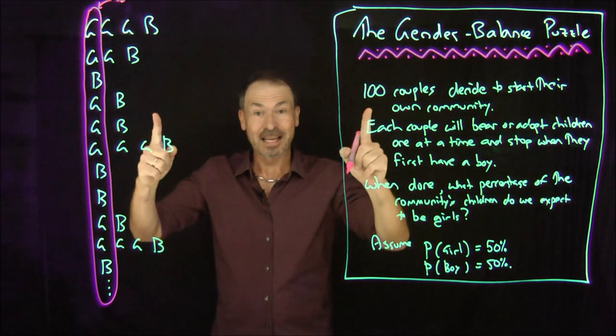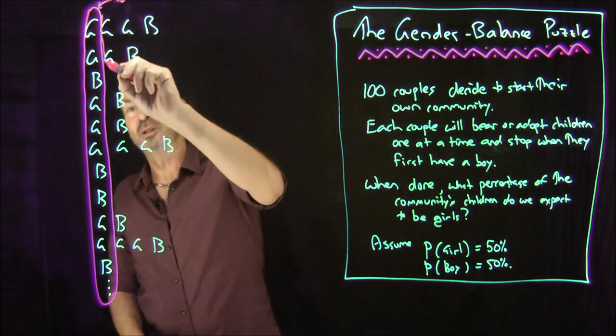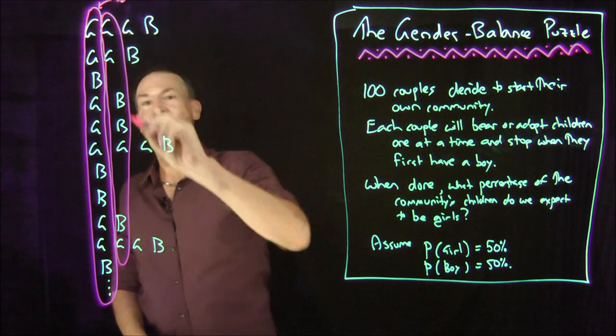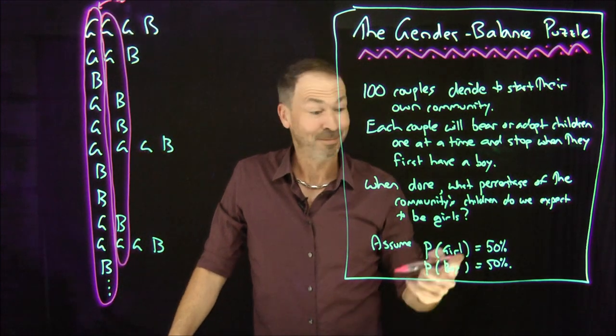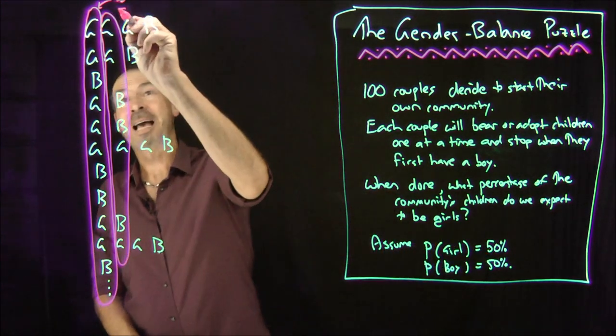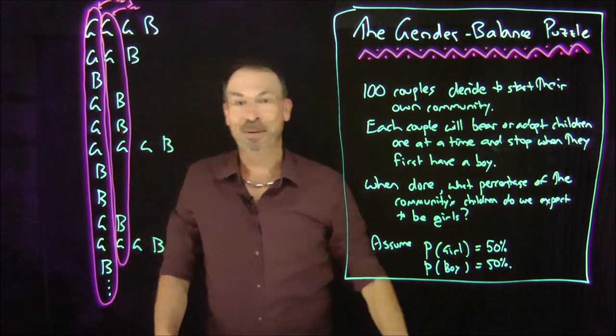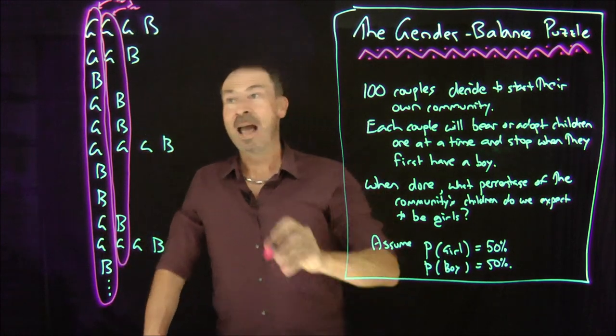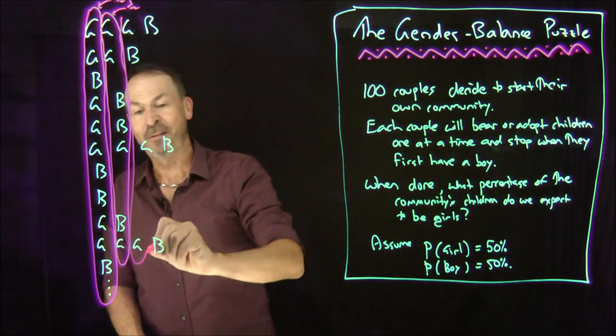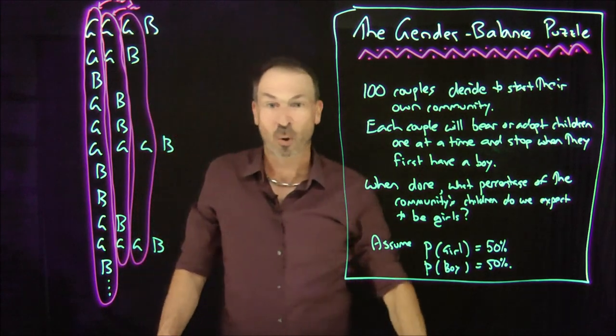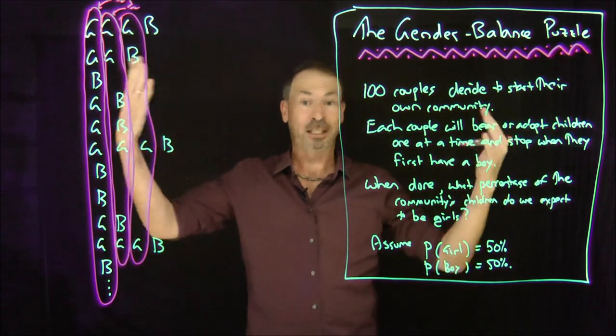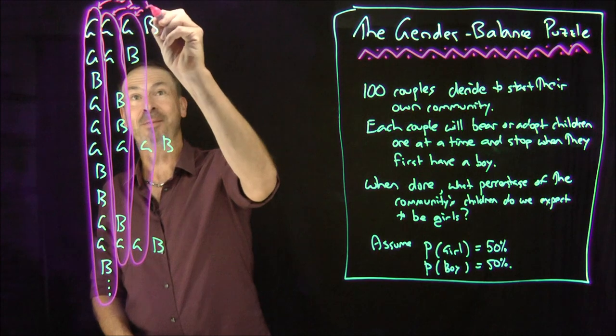And then now go to the next set of data. Look at all the second children in the family. What's the probability that a second child in the family is a girl? Well, it's going to be a half. So we expect half the second children to be girls and the other half to be boys. And look at all the data of all the third children. Now not every family has a third child, but amongst all the data that has a third child, we expect half to be girls and half to be boys.